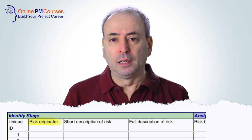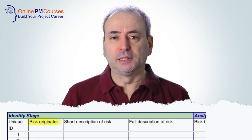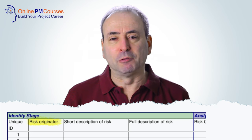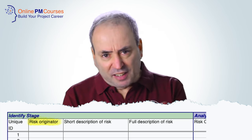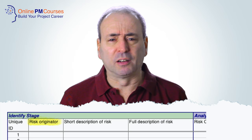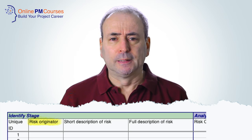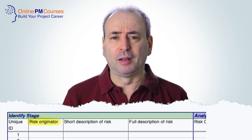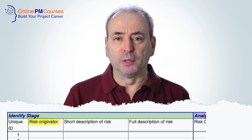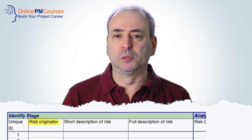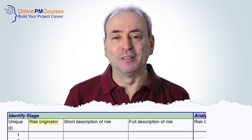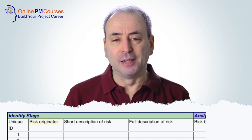Once a risk is identified, it needs to go on the risk register. If for any reason you say 'let's not put that on the risk register', what happens if that risk really does materialize? Someone will remember that you chose not to put it on the register and not to actively manage that risk, and now you become culpable.